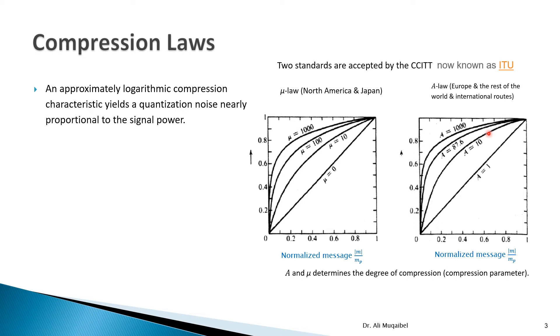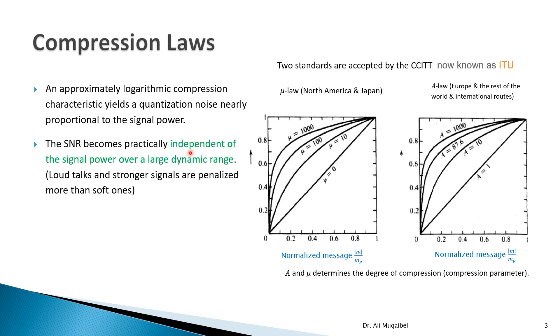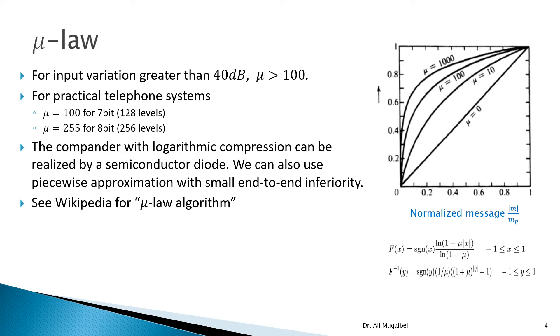So A is a parameter. We can change it. There is an equation that allows you to sketch this curve. So we have A 10, A 87.6, and 1000. And here we have different values for the mu-law. The signal storage should become independent of the signal power because whether the signal is small or the signal is large, we have already changed our signal. Loud talks and stronger signals are penalized more than soft ones.